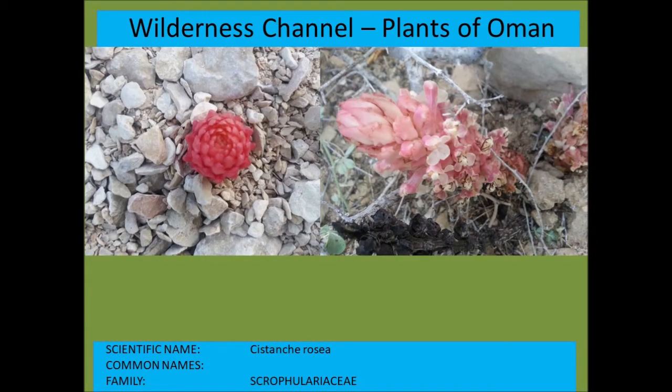Cistanche rosea is one of the parasitic plants from the Scrophulariaceae. It grows on the roots of corkwood trees from the Burseraceae — the myrrh family.